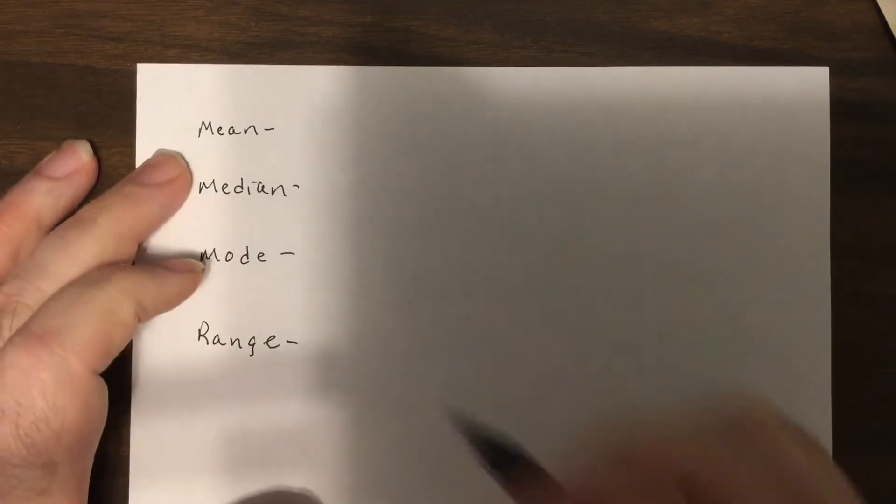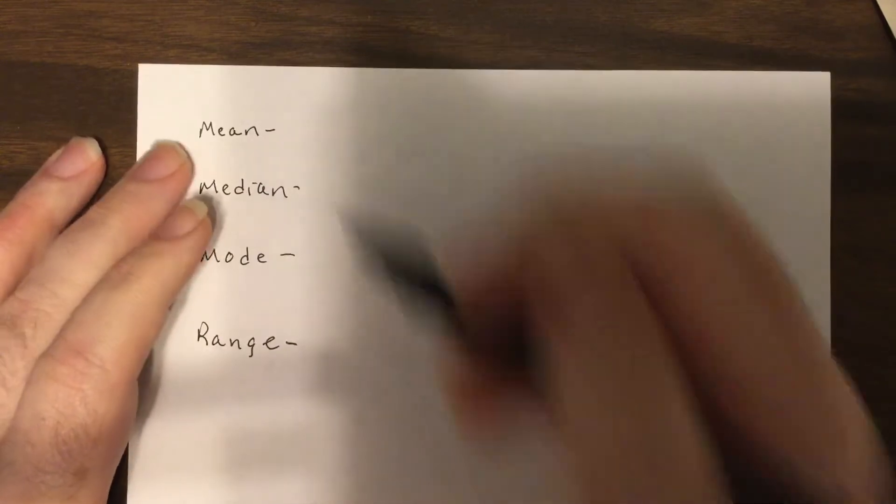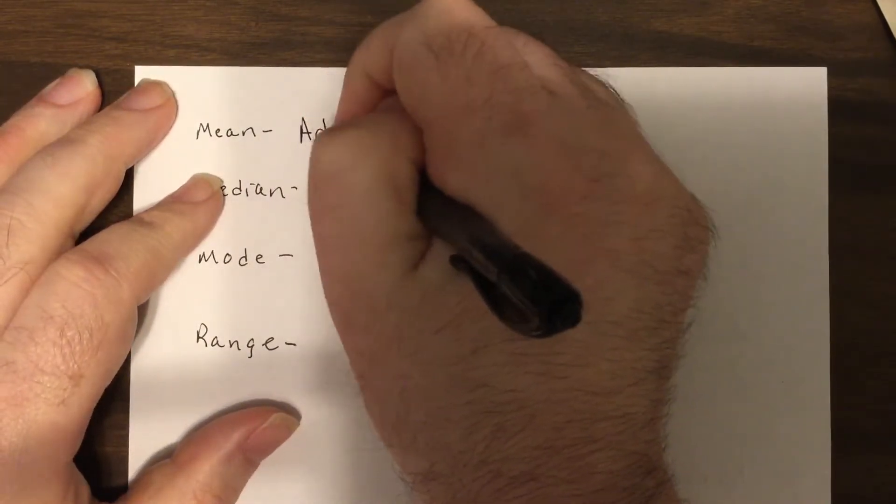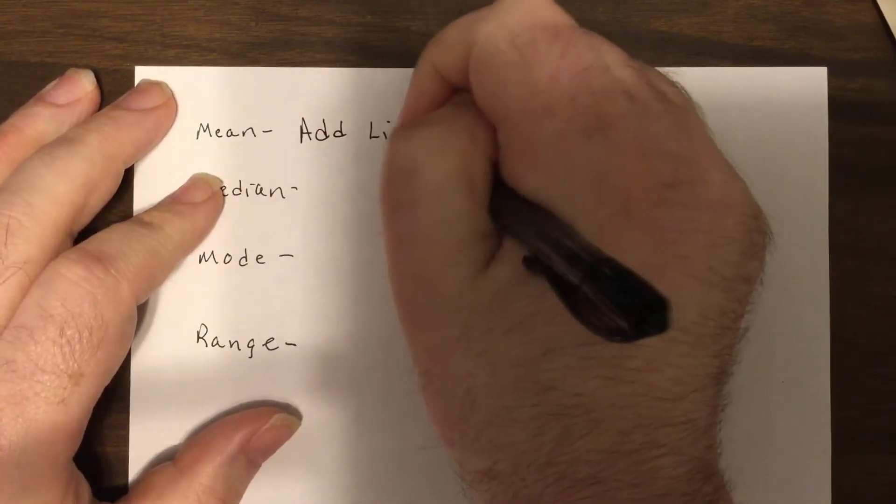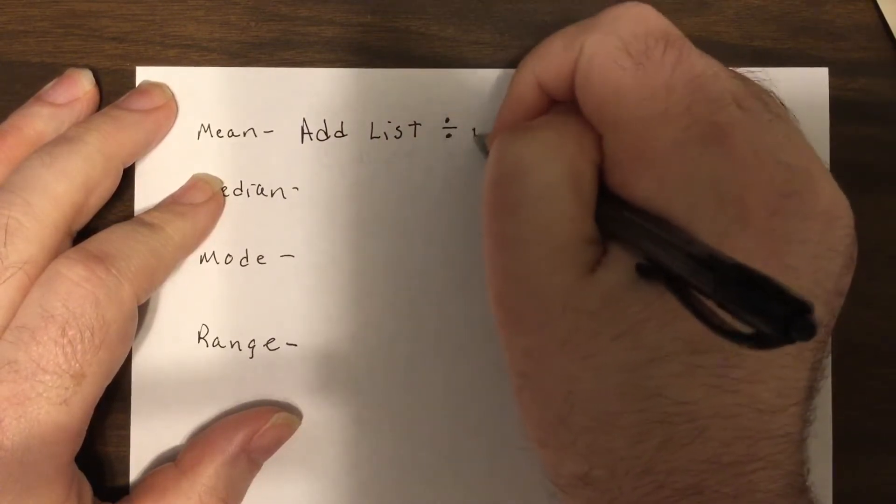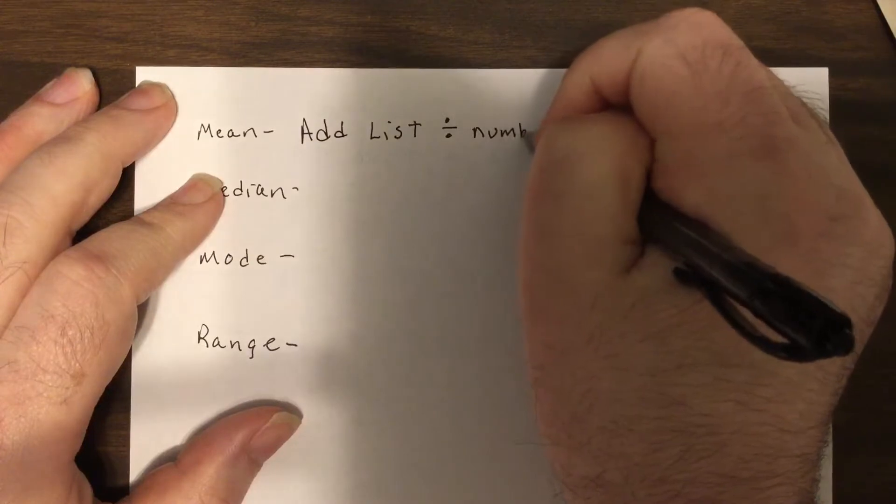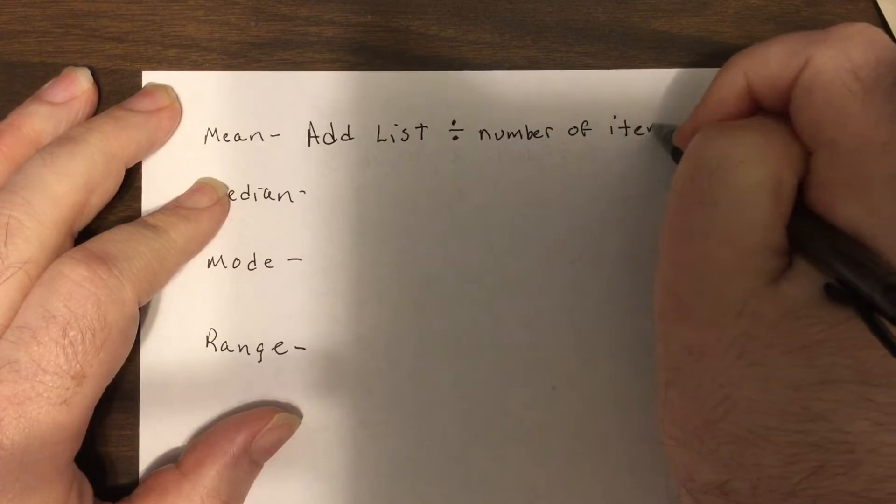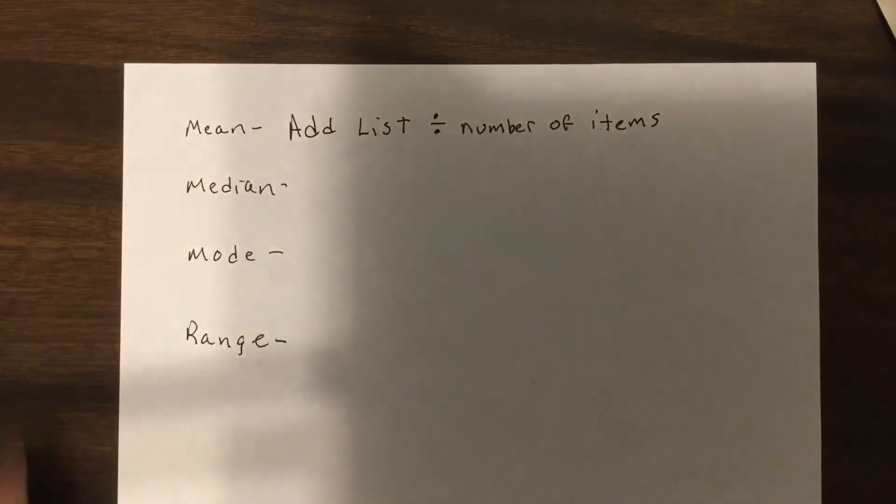The mean is what they used to call average before median came along. You add up the list of items and divide by the number of items. Now the trouble with this is that a very large number or very small number can skew the data.